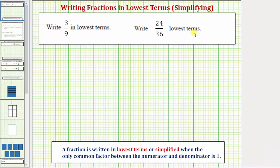We're asked to write the fractions in lowest terms. Questions may also say simplify. A fraction is written in lowest terms or simplified when the only common factor between the numerator and denominator is one. We'll show how to write these fractions in lowest terms, or how to simplify them, using prime factors as well as division.